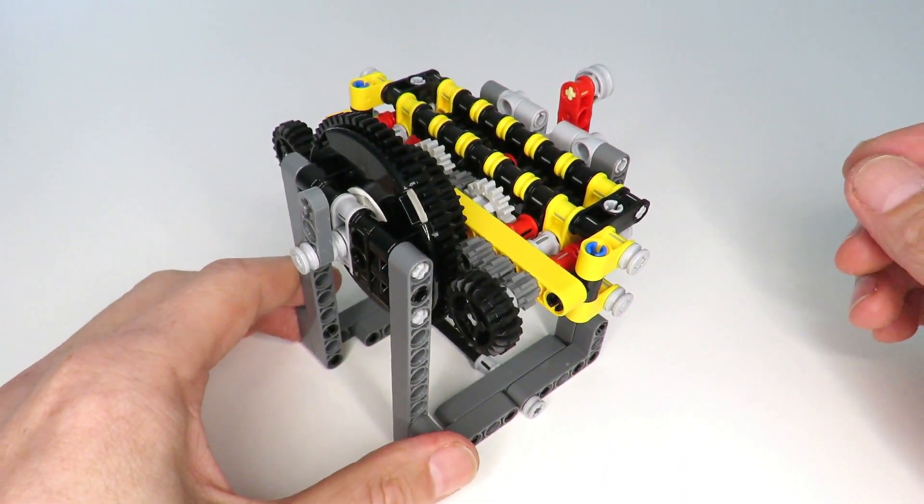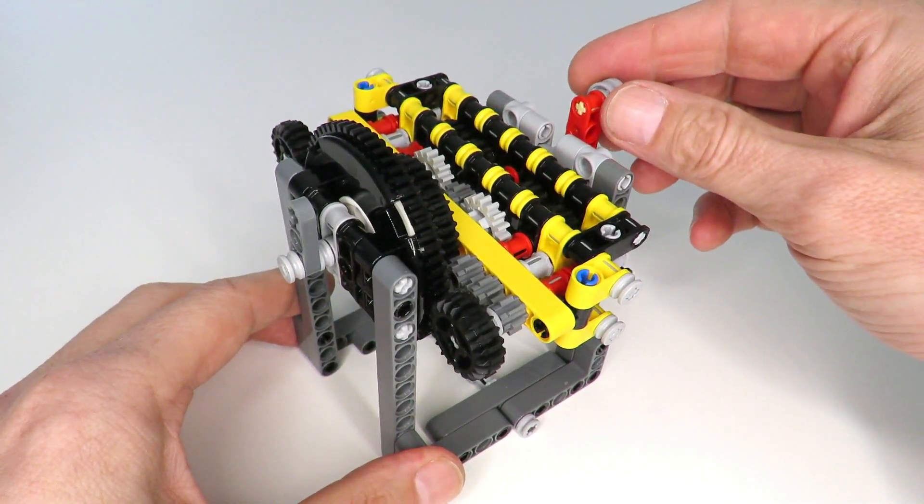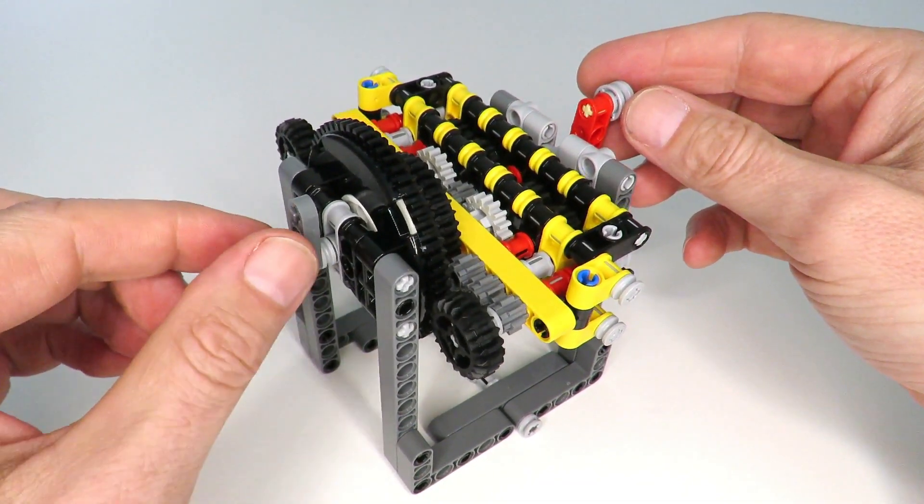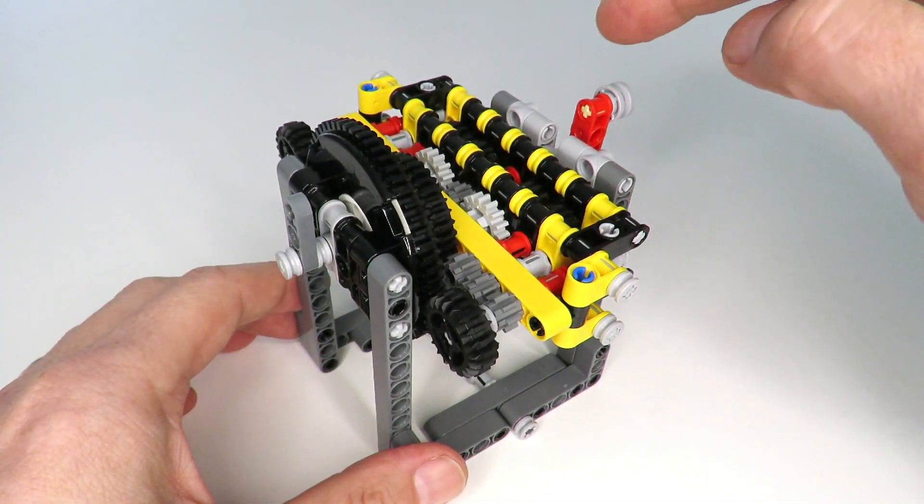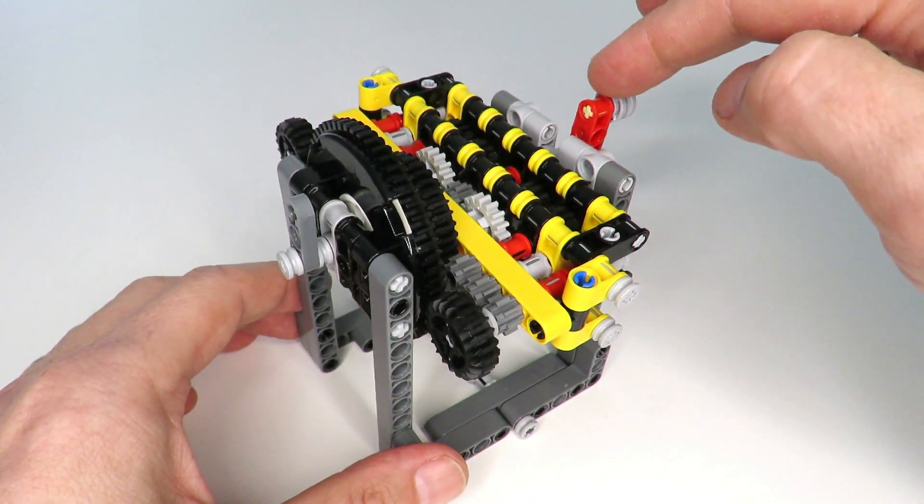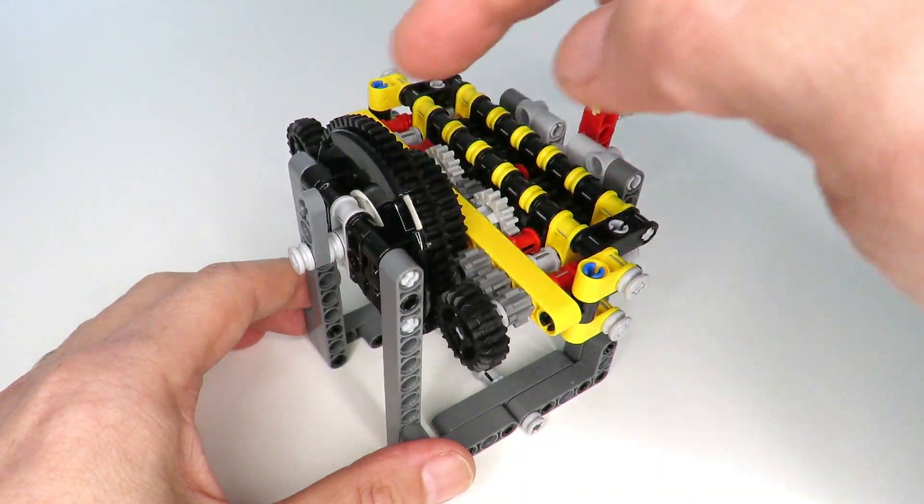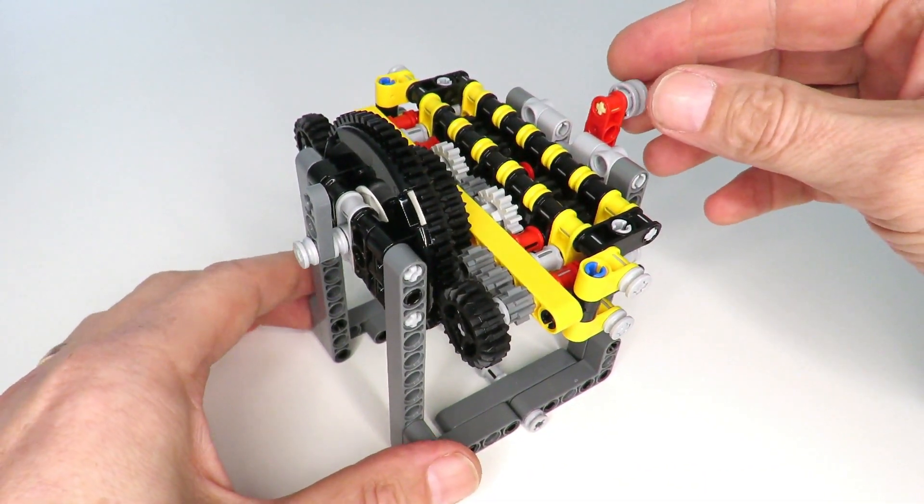just give you a quick demonstration of how it works. So over here we've got the crank handle - it's our input - and over here we've got our output. The idea is that we're going to create a 7-to-1 gear ratio between the input and the output over there, and I'll just demonstrate how that works.